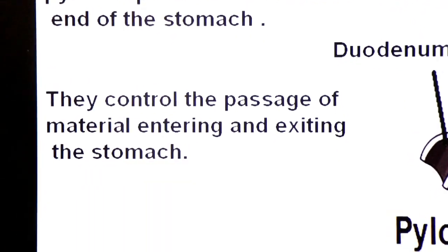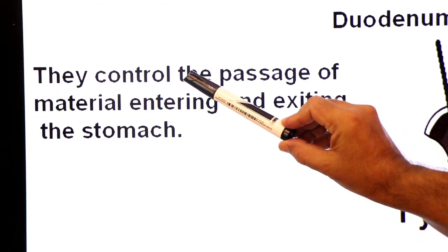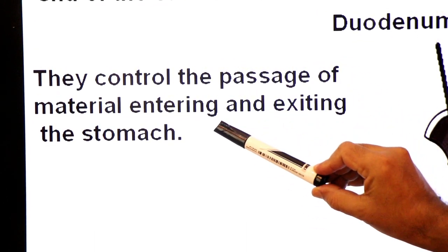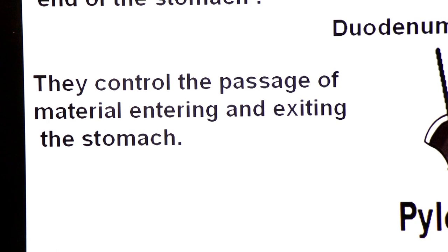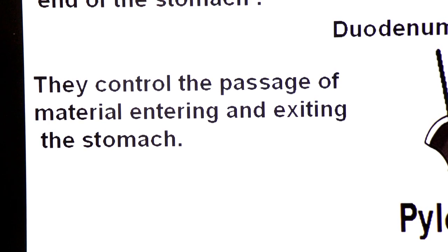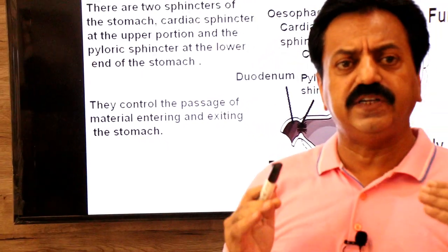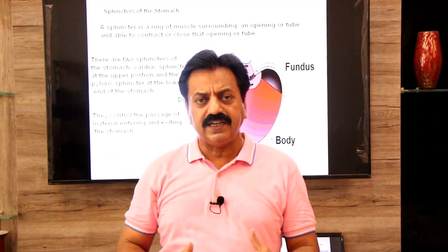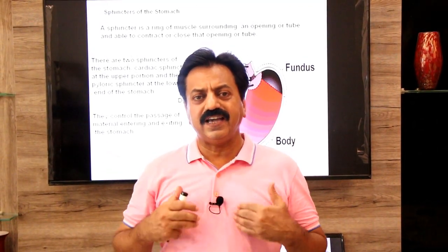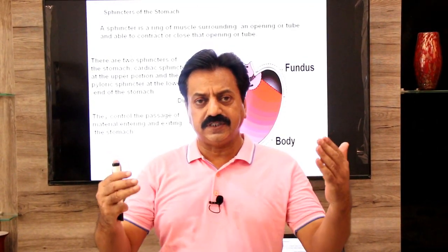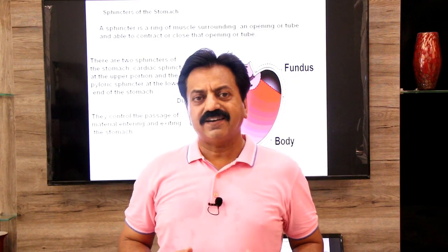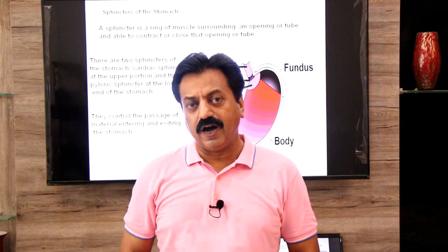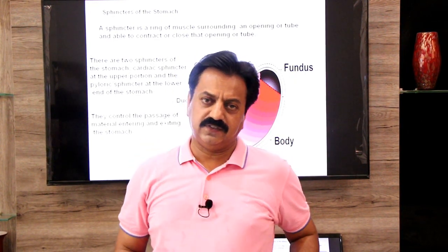What is the function of these sphincters? They control the passage of material entering and exiting the stomach. These sphincters control food entry and exit through the stomach — the cardiac sphincter at the entry point and the pyloric sphincter at the exit point.